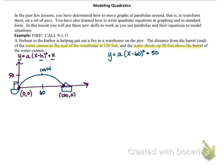Unfortunately, we cannot use the vertex as one of the coordinate points we plug in to x and y, because if we plugged in 60 to x, we would have 60 minus 60 squared, which would give us 0, and then y would equal 50, which we already know that point exists. So we can either choose to use (0, 0) or (120, 0). For this example, I will be using (0, 0).